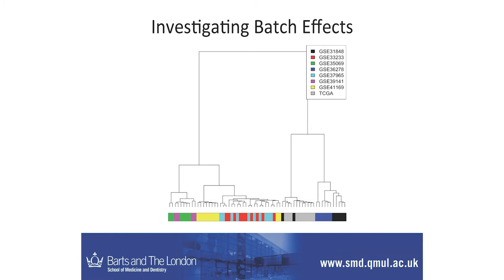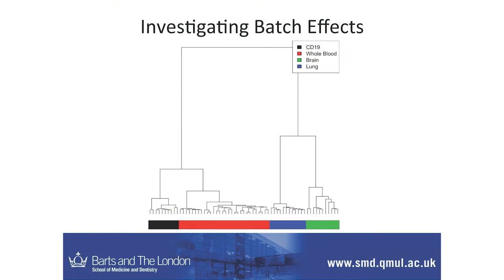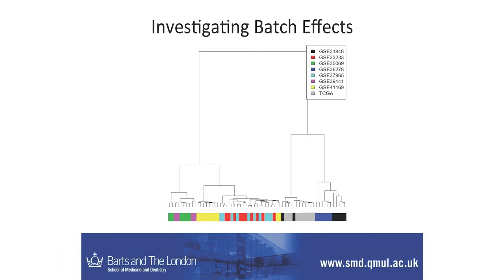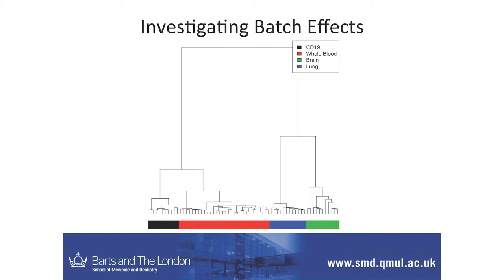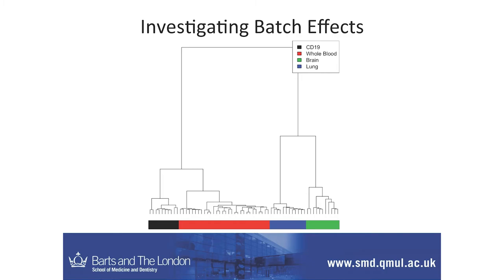People are always worried about batch effects. Here we have a number of different studies, essentially random, and you can see some big clustering. They're coloured by their experiment, and they're not really clustering together purely by experiment — there's some commonality, but that's more to do with cell type. What's really interesting is you can see a different blood separation of what's been labelled as whole blood. You might think that's a batch effect, but there's another batch from the same experiment over there. So clearly, although it's whole blood, there's something different in terms of the proportion of cells in that blood.